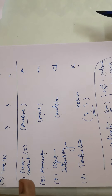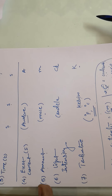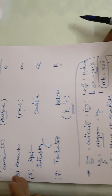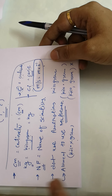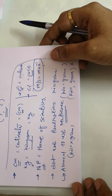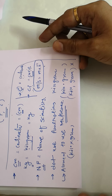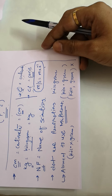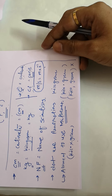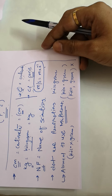To recap, the seven SI base units are: mass, length, time, electric current, amount of substance, light intensity, and temperature. I hope you have understood these units, how to represent them, and what the basic rules are for writing them. Thank you.